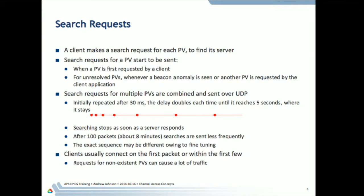Usually clients get a response from their server within one or two search packets, so this technique is pretty fast in most cases. The only place where problems occur are if you're searching for PVs that no longer exist — somebody removed them from the IOC or there was a typo in the name. Requests for non-existent PVs continue being sent at a low level and can cause unwanted traffic. There are tools you can use to monitor your network for searches for channels that don't exist, so you can find the client and change it to stop searching for those names.